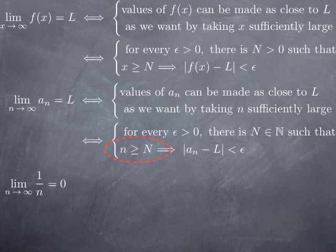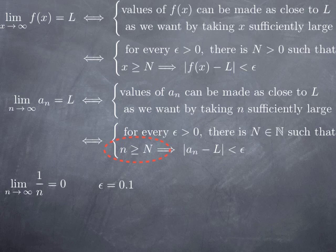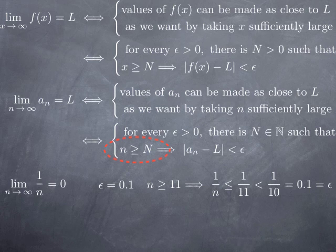Let's use that to check that the limit of 1/n is indeed 0. For every epsilon, let's test a particular value: say epsilon = 0.1. We want the values of the sequence, i.e., 1/n, to be within 0.1 of 0 — in other words, we want 1/n < 0.1. We need to find a capital N such that whenever n is greater than N, this condition holds. We can take N = 11, because if n ≥ 11, then 1/n is certainly less than 1/10 = 0.1. So for any n ≥ 11, 1/n is less than our epsilon of 0.1.